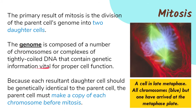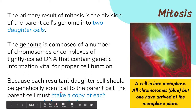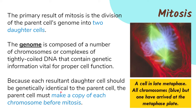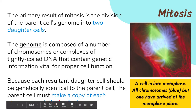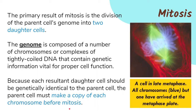Because each resultant daughter cell should be genetically identical to the parent cell, the parent must first make a copy of each chromosome before mitosis. If you still remember, during S phase of interphase, that is the time when DNA replication occurs. So before mitosis, the parent cell must have two copies of the chromosome set that will be distributed to the two daughter cells.